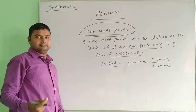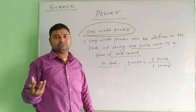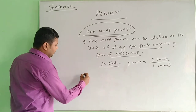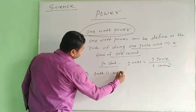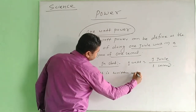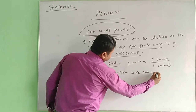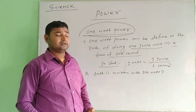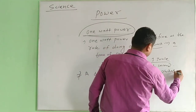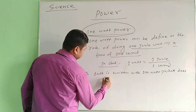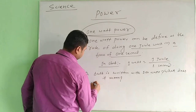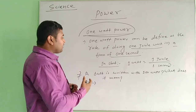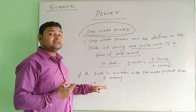For example, a bulb is written with 100 watt. It means 100 joules of electrical energy are converted into heat and light energy in one second. So 100 watt means 100 joule of electrical energy converts into heat and light energy in one second.